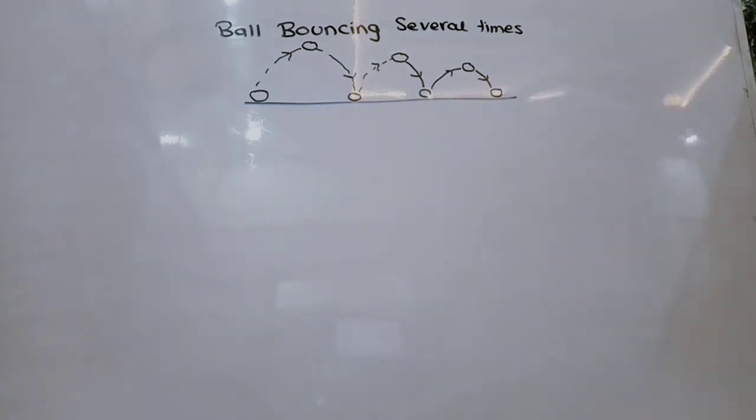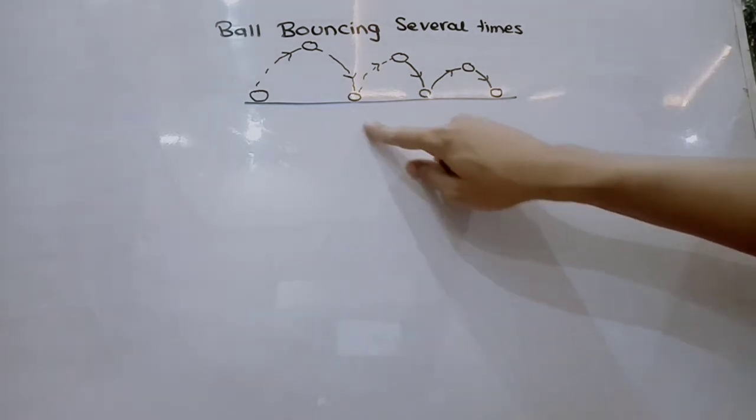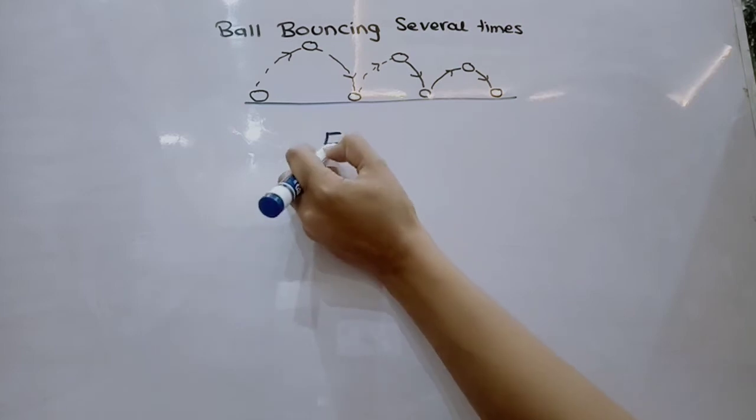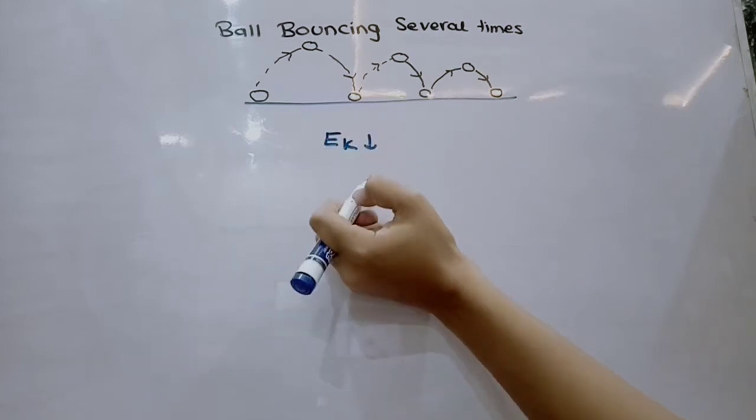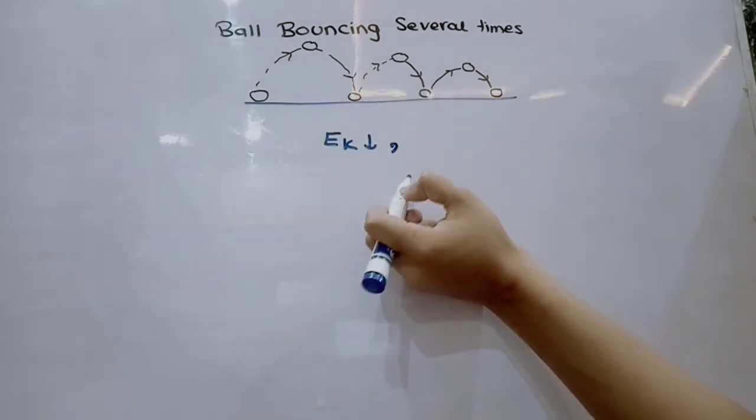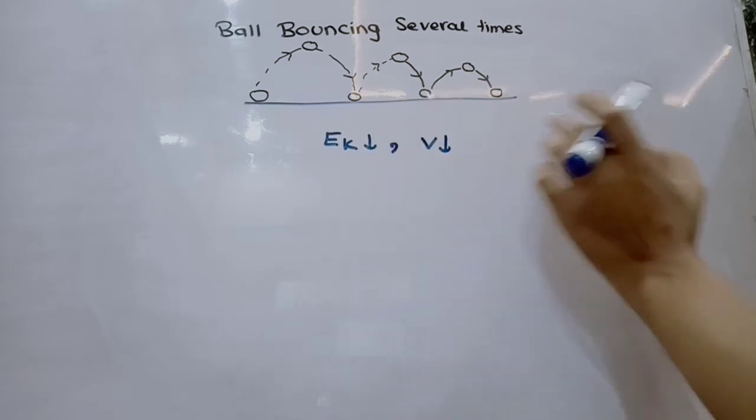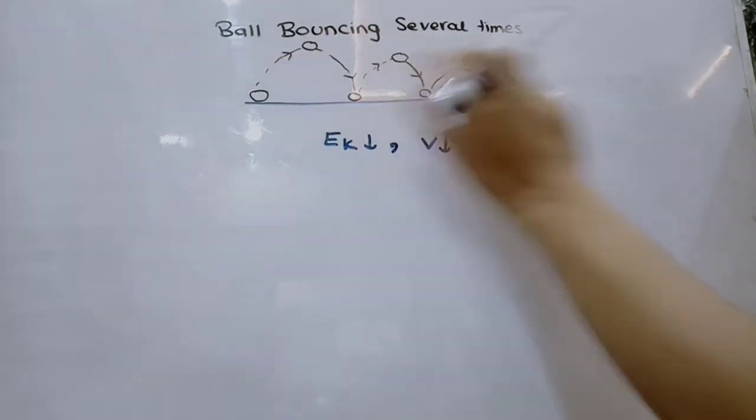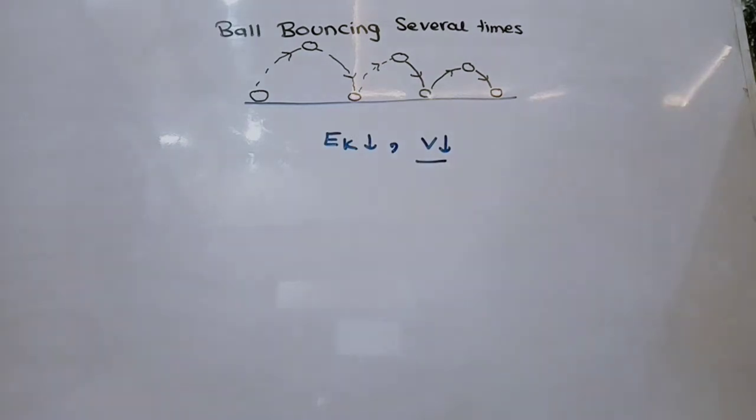The reason behind this is that whenever the ball is in contact with the surface, there is always energy loss as a result of heat. When there is energy loss, the kinetic energy decreases. Because conservation of energy is maintained, when kinetic energy decreases, velocity also decreases. As a result, the potential energy decreases, so the height and velocity decrease.